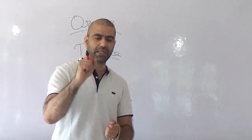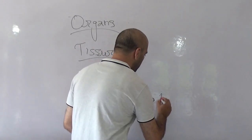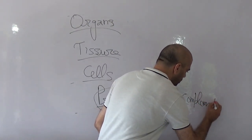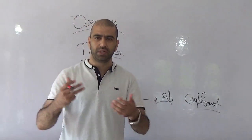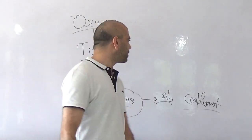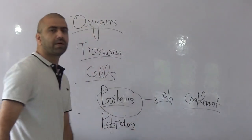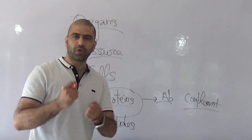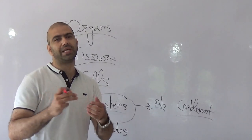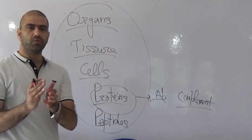Both antibodies and the complement system act as opsonizers — meaning they tag the intrusion, whether it's bacteria, a virus-infected cell, or something else. Antibodies are also known as immunoglobulins. The complement system has three types of pathways: classical, alternate, and lectin pathway. Peptides such as cytokines also play a role — for example, interferons fight against viruses, and interleukins help cells communicate to elicit a particular response.